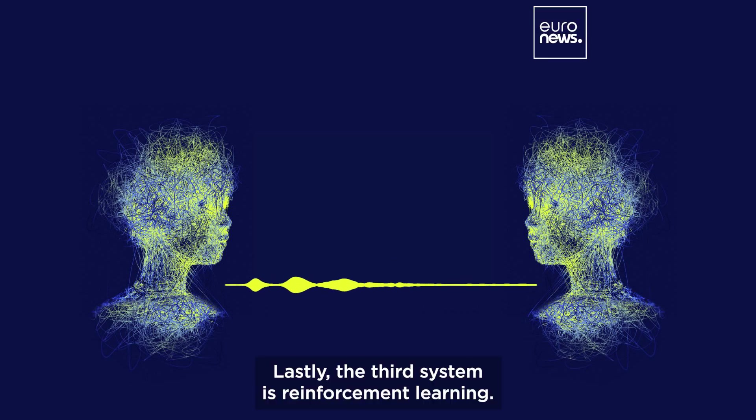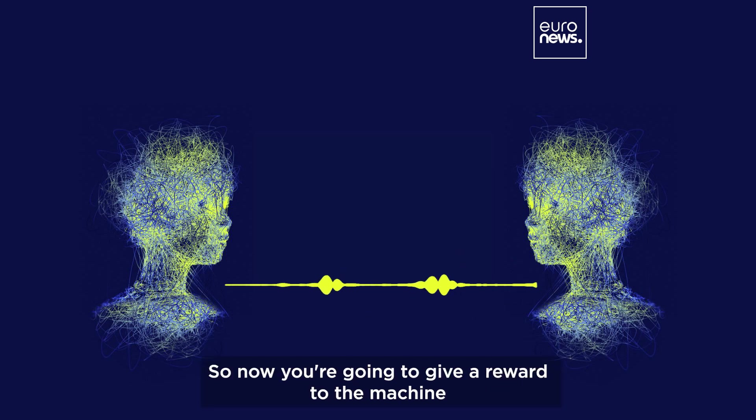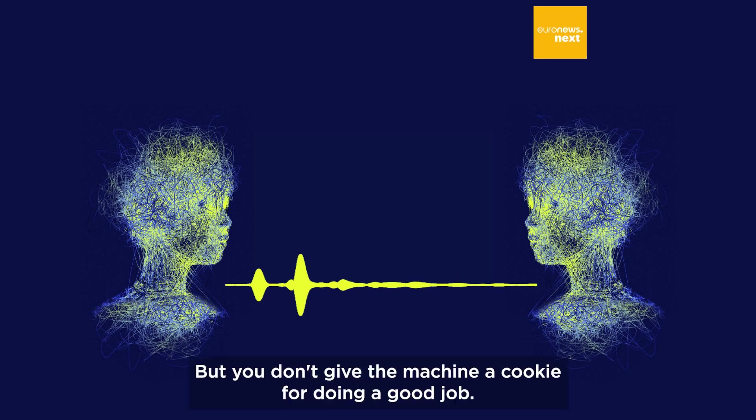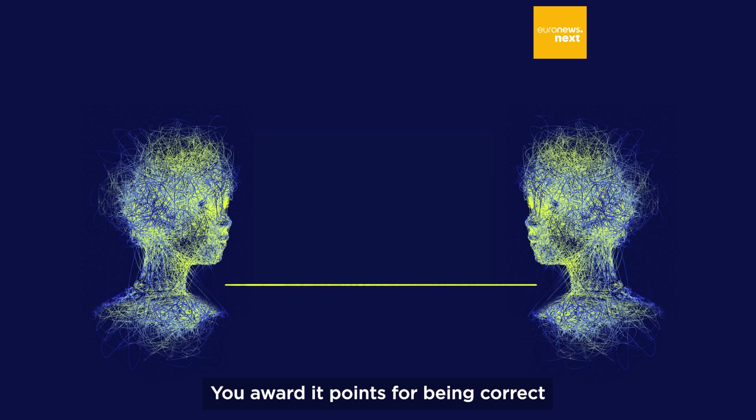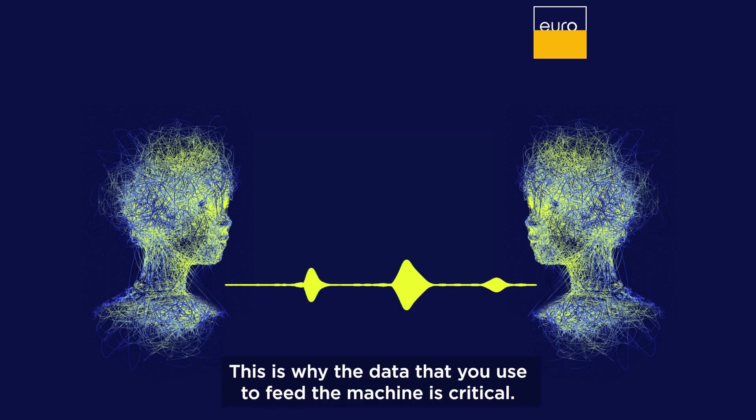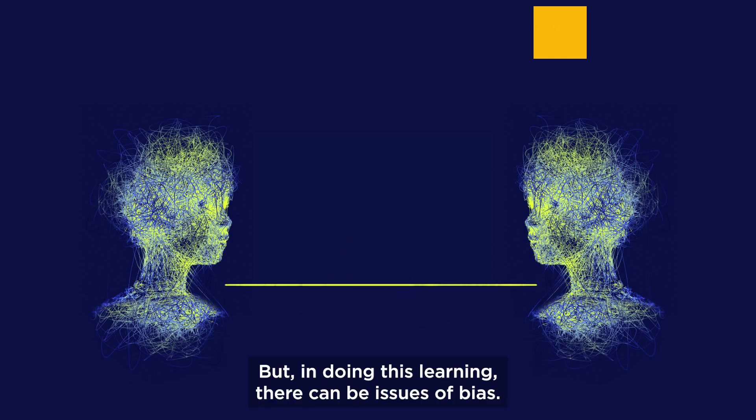Lastly, the third system is reinforcement learning. The machine learns like if you were teaching a kid. Now you're going to give a reward to the machine if the machine does a good job, but you don't give the machine a cookie. You award it points for being correct, and it learns how to make more correct decisions by being awarded those points. The machine wants to maximize that reward, so this is why the data that you use to feed that machine is critical.